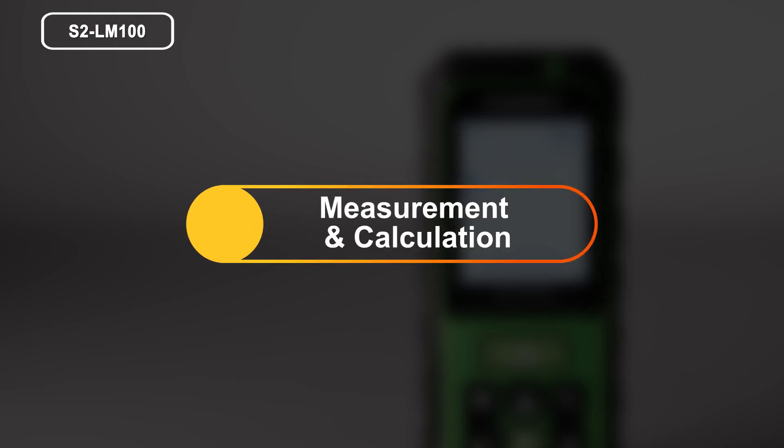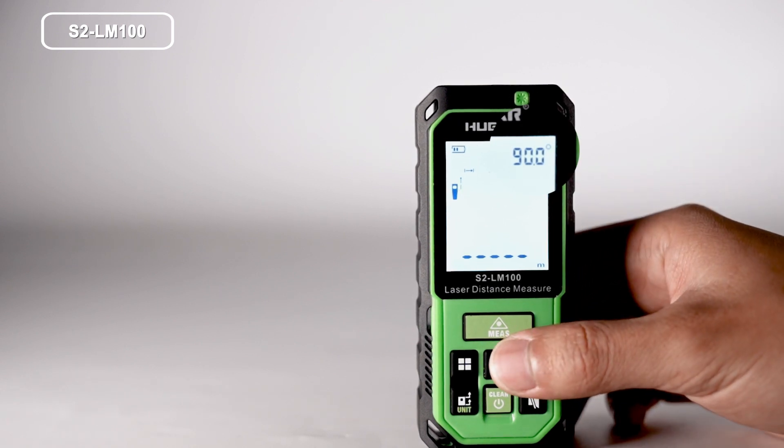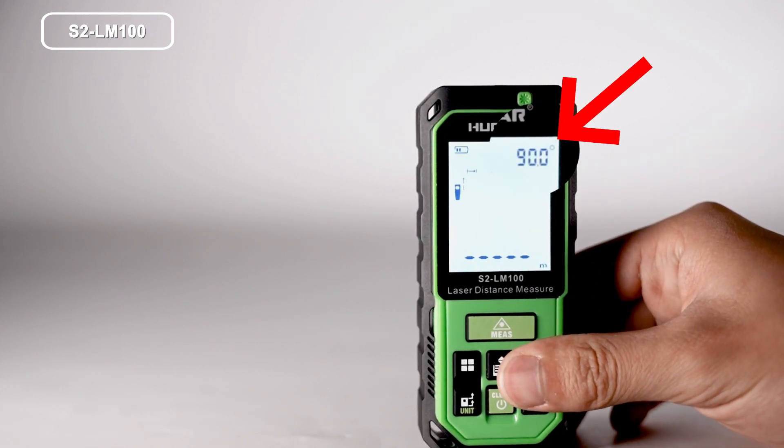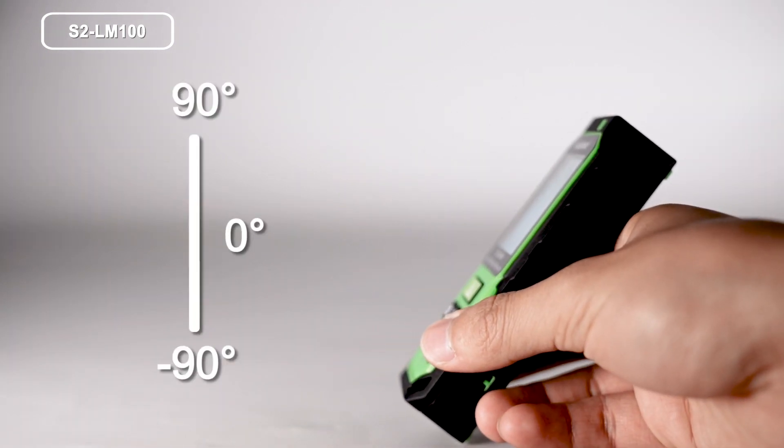Measurement and calculation. Angle measurement: the angle information is displayed on the top of the screen. The angle measurement range is negative 90 degrees to positive 90 degrees.